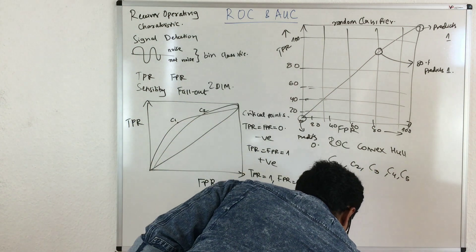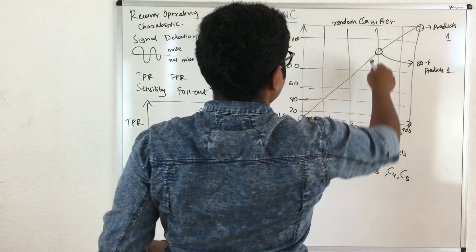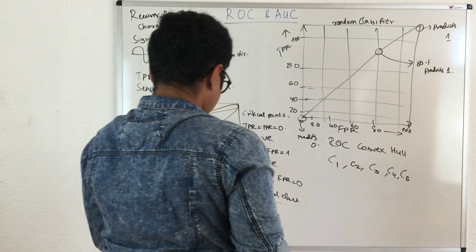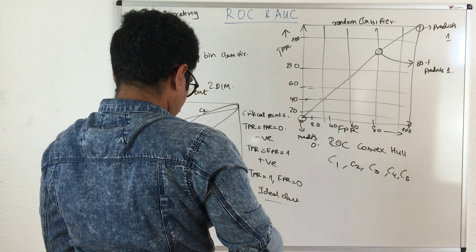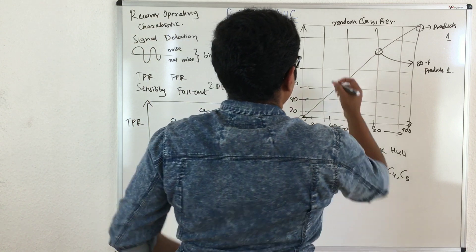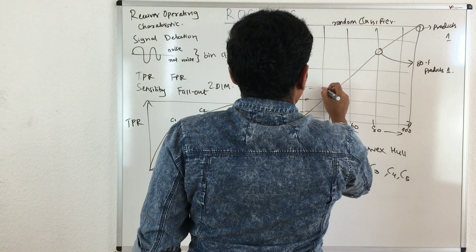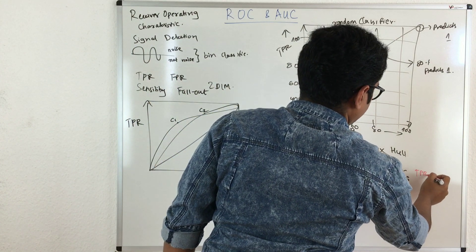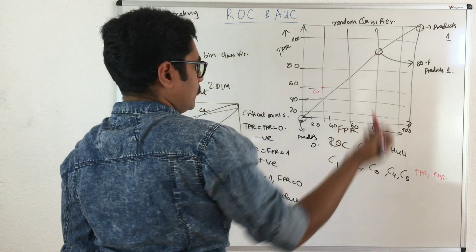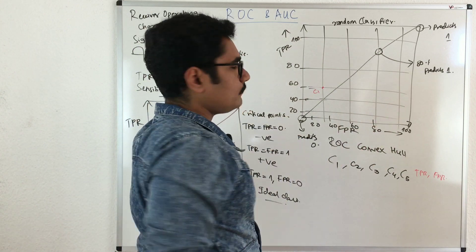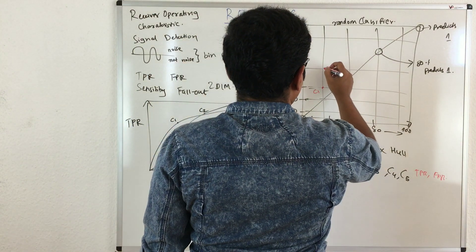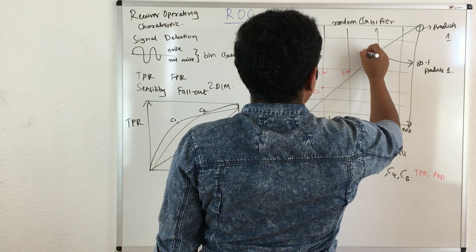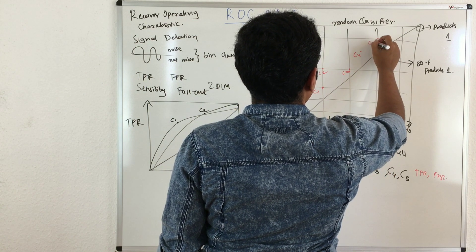Now I'll construct this over here. Just consider we have five of these. Each of these will classify the true positive rates and false positive rates, and we'll plot on one single curve. We have C1 here, then C2 here, then C3, then C4 and C5.